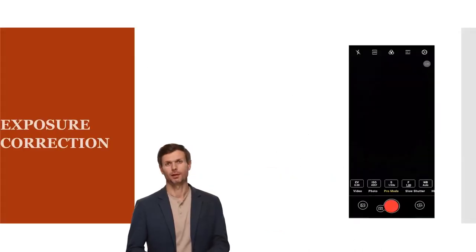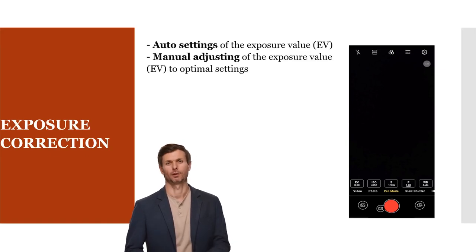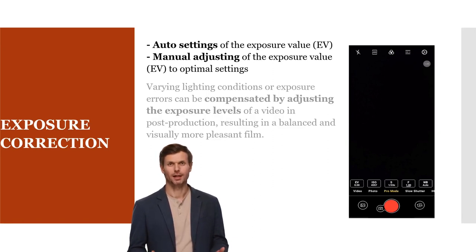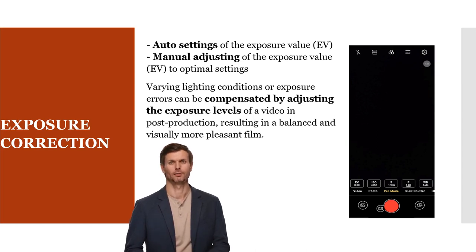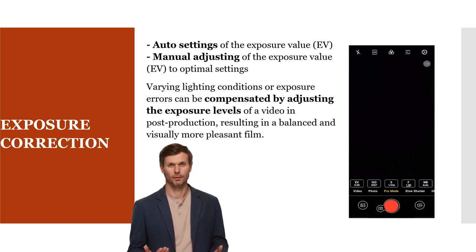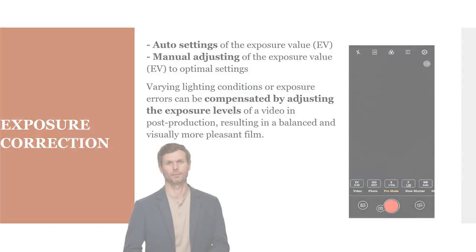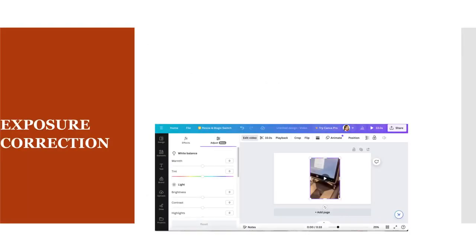An inexperienced videographer will keep the camera on auto exposure settings, while a well-prepared filmmaker will adjust the exposure value to optimal settings before recording. However, varying lighting conditions during filming or exposure errors made while recording can be compensated by adjusting the exposure levels in post-production, resulting in a balanced and visually more pleasant film.